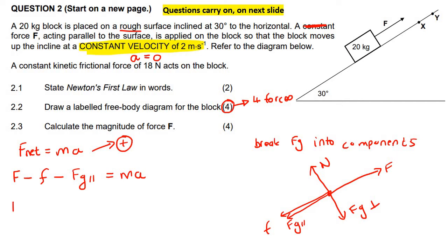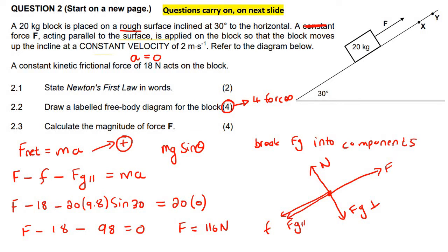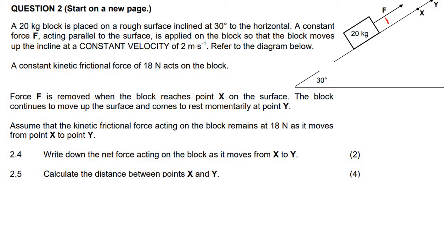Now I can go and fill in. F is what I'm trying to calculate. The friction force is 18 newtons. FG parallel, some of you forget, but that is mg sin theta, not cos. So that's going to be 20 times 9.8 times sin of 30. And then that's equal to the mass, which is 20, multiplied by the acceleration, which is zero. We said earlier the acceleration is zero because we are moving at a constant velocity. So now we can just say F minus 18 minus 98 equals zero. And if we solve, we would find that F is equal to 116 newtons. You don't have to say up the slope or down the slope because they asked for the magnitude. When they say magnitude, it only means the size. You don't necessarily have to also give the direction.